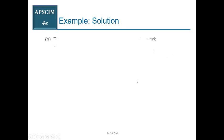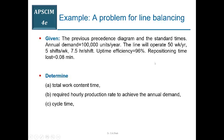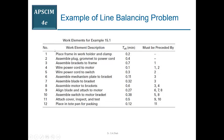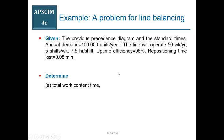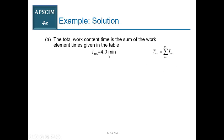Let us start with the solution. Total work content time is simply the summation of all work element times. In this case we have 12 work elements, so TWC equals TE1 + TE2 + ... + TE12. Adding all operation times from the table, TWC comes out to be exactly 4 minutes.